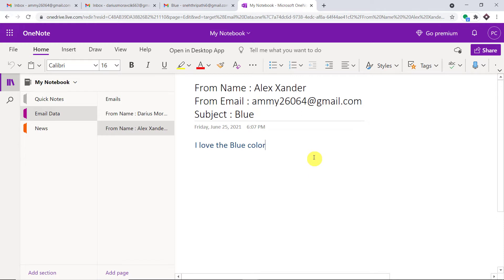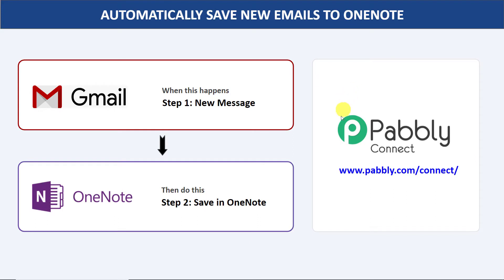You must be thinking: how did I manage to send the data from Gmail to OneNote? I used an integration and automation software called PabblyConnect that integrates Gmail to OneNote. The best part is there is no need for coding skills or technical background — it can be done easily. I used an email parser to receive the data from Gmail. Don't worry if you don't get email parser — I will explain this in a minute.